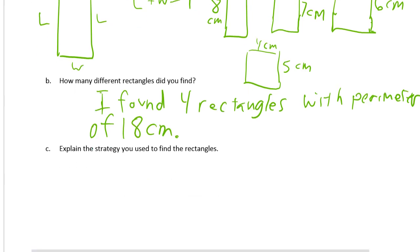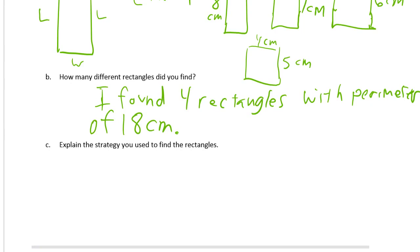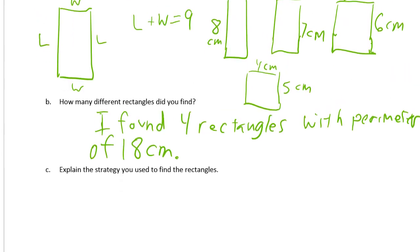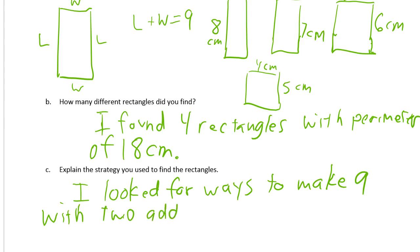Explain the strategy you used to find the rectangles. I'll just have to describe what I used here. I look for ways to make nine with two addends. There's a bonus there. Let's use the word addends. Get that math vocabulary in there.